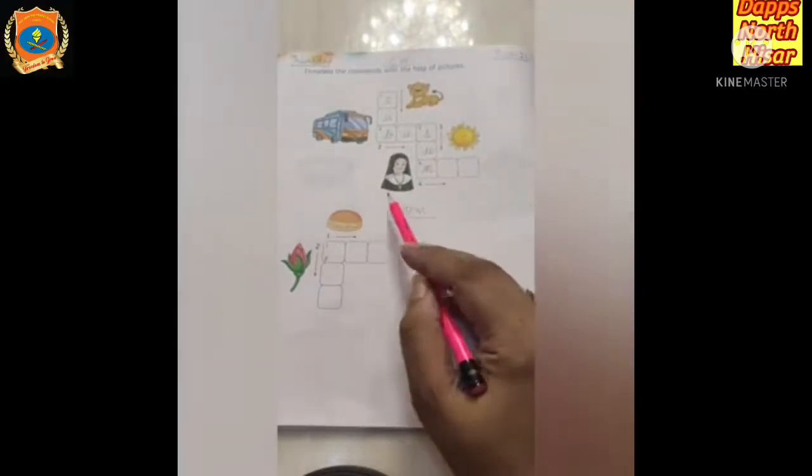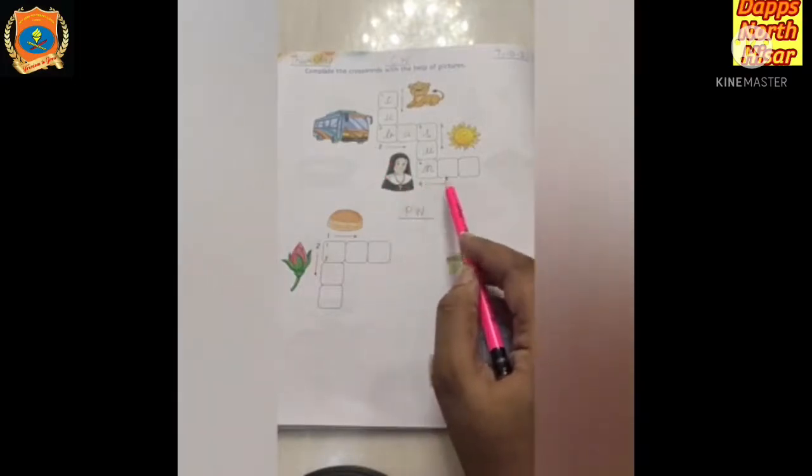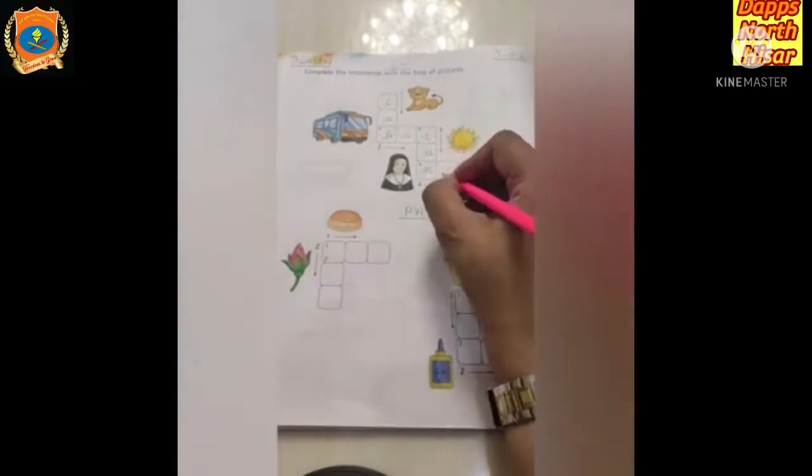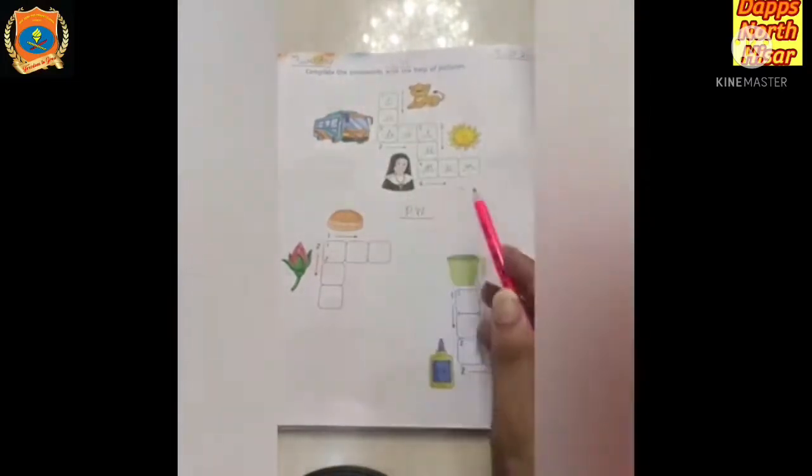Now the fourth and the last picture is, what is this? This is none, n, o, n, e, none, is it clear to everyone? We have completed the crossword.